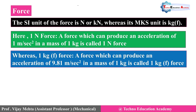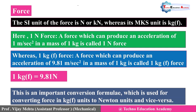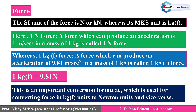Regarding 1 kgf, the relationship between kgf and Newton is: 1 kg = 9.81 N. This is an important conversion formula used for converting force from kgf to Newton or Newton to kgf, where g = 9.81 m/s² is the value of gravitational acceleration.